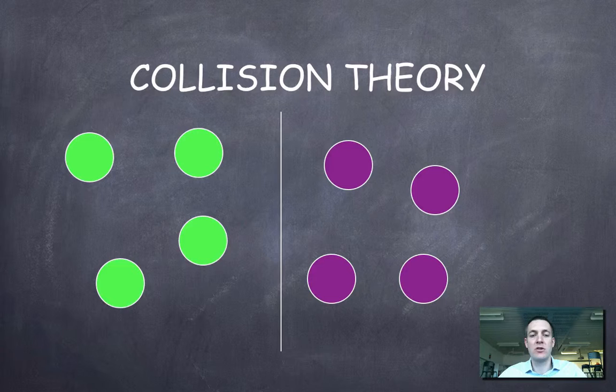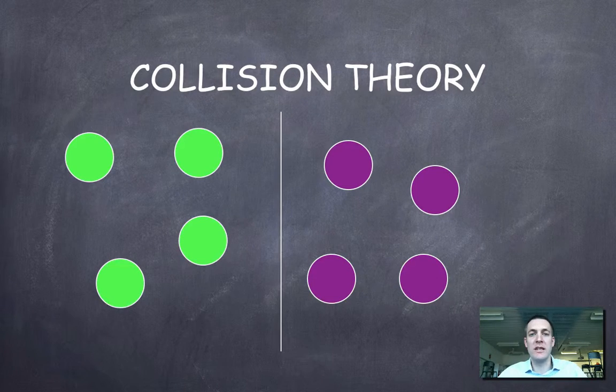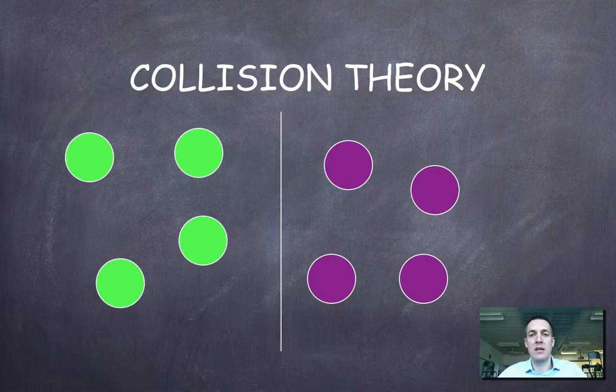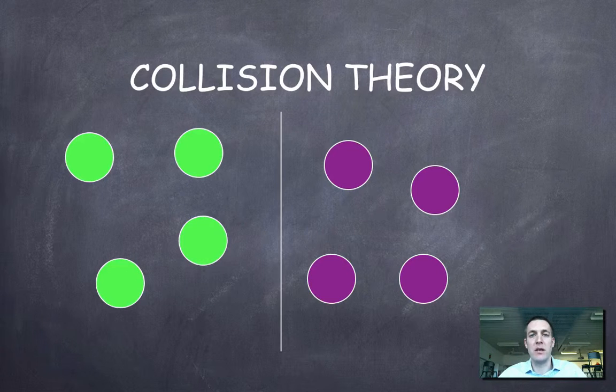Now this diagram here is supposed to show us two sets of particles, the greens and the purples, which could potentially react together and make some new substance. Okay, but this line down the middle is supposed to represent a barrier.